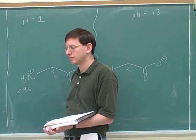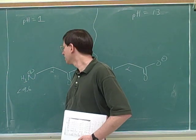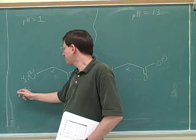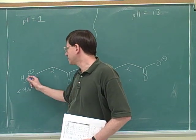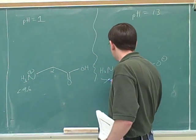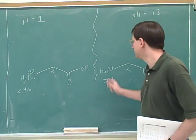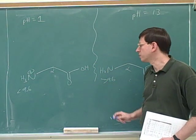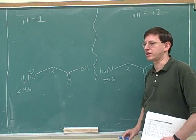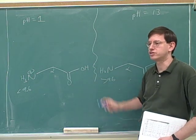At 9.6, at that pKa value. Well, if the pH was lower than 9.6, the majority of the nitrogen would be in this form. If the pH is greater than 9.6, the majority of the nitrogens would be in this form. So if the pH is exactly at 9.6, then we should have equal amounts of these two forms.